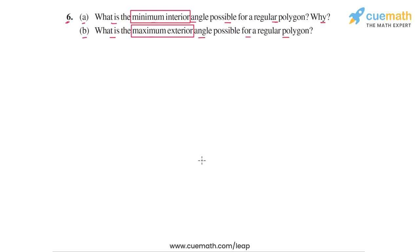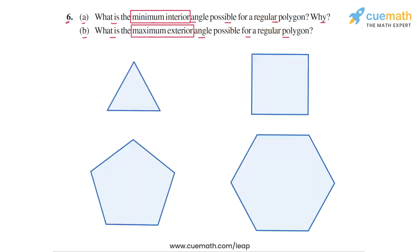Let us analyze a few cases of regular polygons and come up with the answers for both of these parts. In this figure, I have taken four regular polygons: an equilateral triangle with three sides, a square with four sides, a pentagon with five equal sides, and a hexagon with six equal sides. Each of these are regular polygons. Let's analyze the interior angles and the exterior angles in each case.